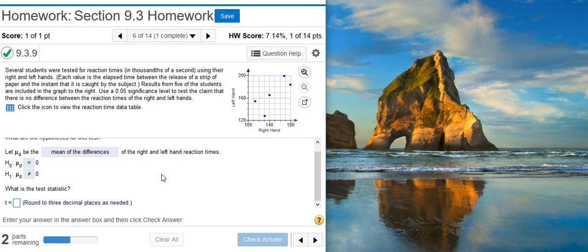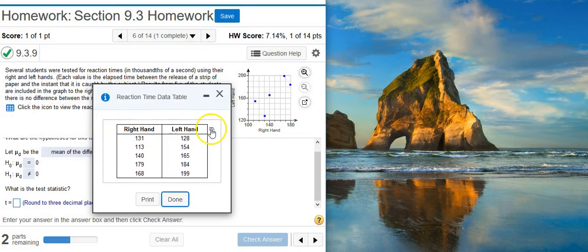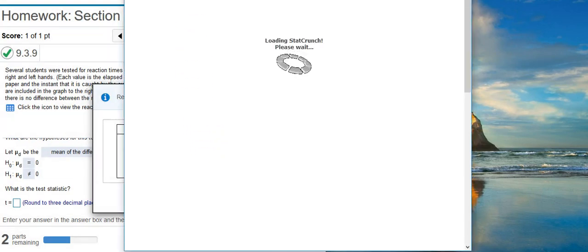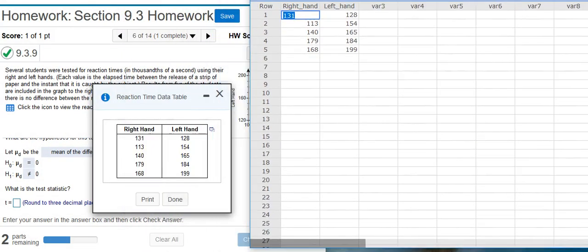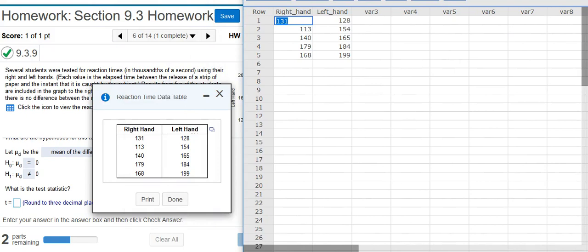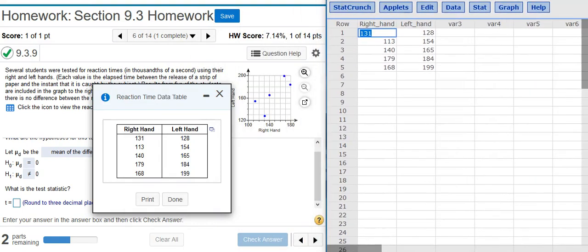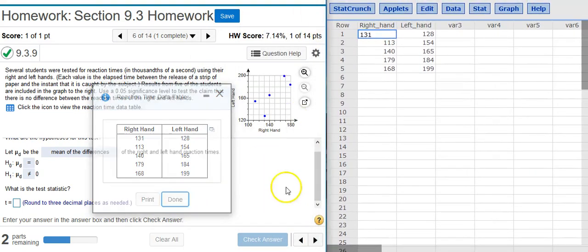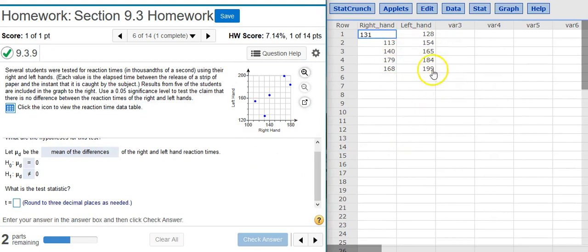Now, the next part asks us for the test statistic. And to do that, we're going to access the data here, and we're going to dump the data into StatCrunch. Resize the window here, so we can get a better look at what's going on. And now, with the data here in StatCrunch, I'm going to go up to Stat,